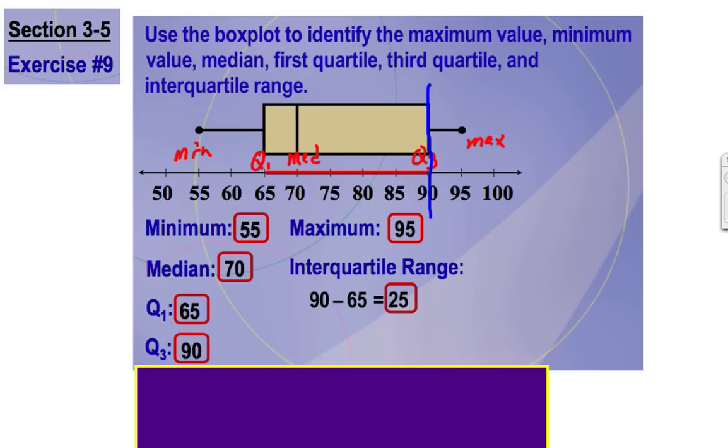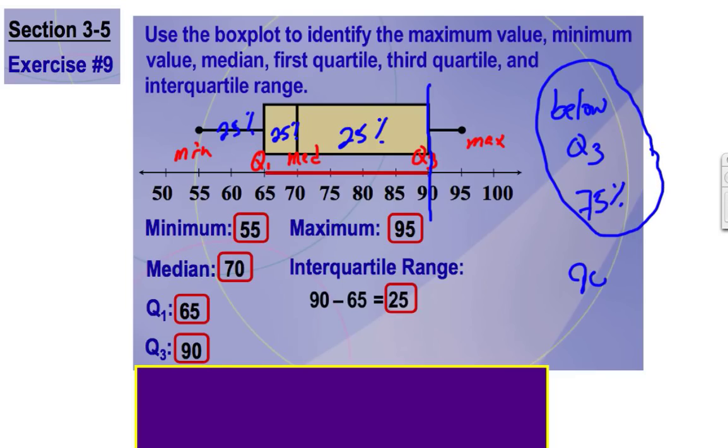What percentage of the data is found below quartile three? Okay, well, here's 25%, here's 25%, and there's 25%. So that means that 75% of the data is found below Q3, or 75% of the data is found below 90.